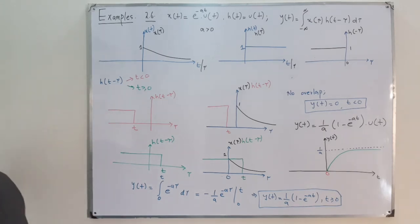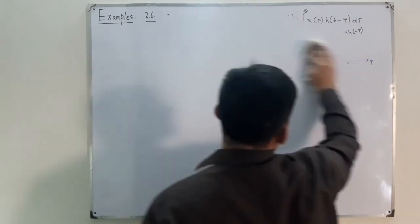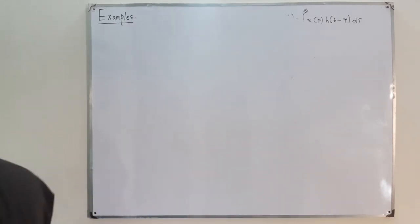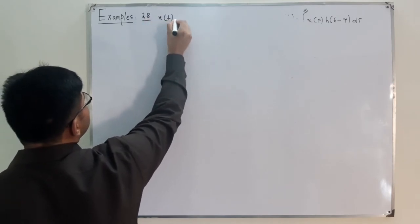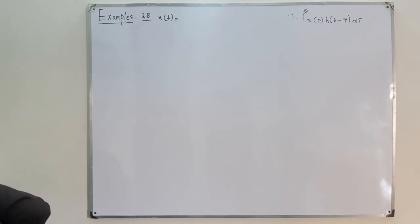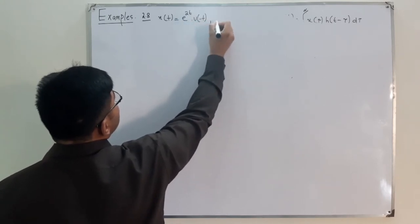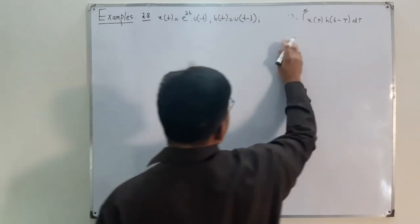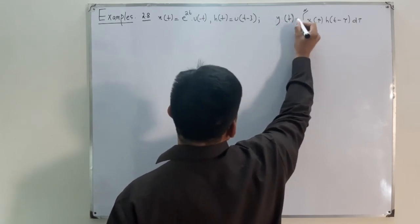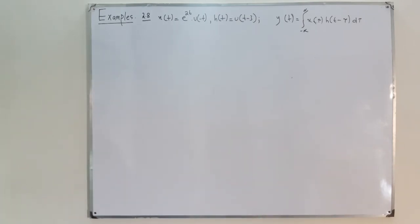Let's do one more example before it gets boring. This is example 2.8 from the book. Here, x(t) = e^(2t) · u(-t) and the impulse response is h(t) = u(t - 3). We want to find y(t) from the convolution integral.